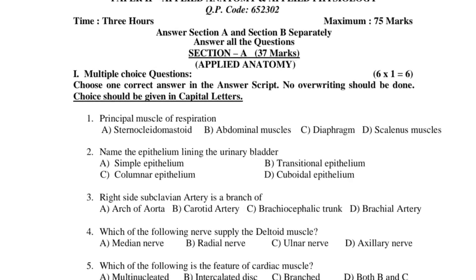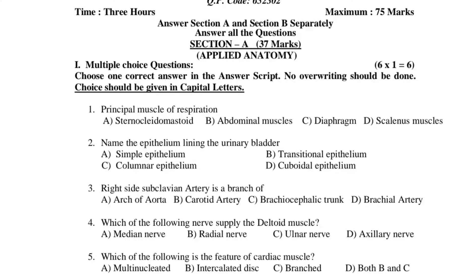We will see the multiple choice questions one by one. First question: principal muscle used for respiration. A. Sternocleidomastoid muscle. B. Abdominal muscles. C. Diaphragm. D. Scalenus muscle.